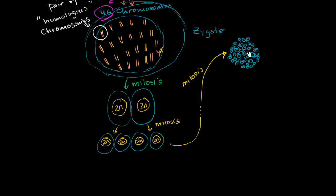We now have a big ball of cells, each with 23 pairs of homologous chromosomes. Some of them are going to differentiate into the different parts of my body. For example, these cells might eventually differentiate into my brain cells, these cells here might differentiate into my heart, and these right over here might differentiate into my lungs.